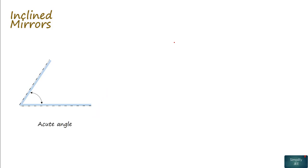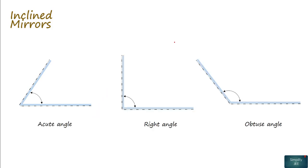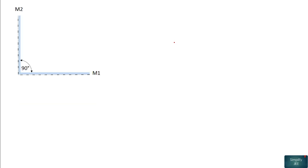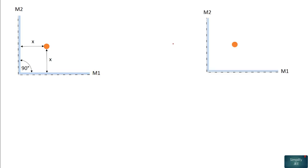For inclined mirrors, we may have mirrors inclined at an acute angle, at right angle, or at an obtuse angle. Now let's start the discussion about mirrors inclined at right angle. Here we have an object O placed such that its distance from mirror M1 is X and from mirror M2 is also X — that is, the object is placed symmetrically with respect to both the mirrors.